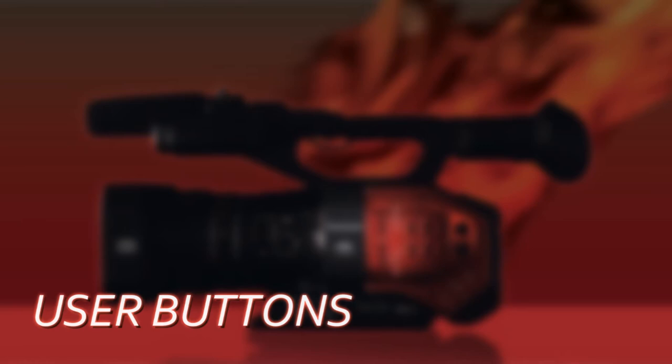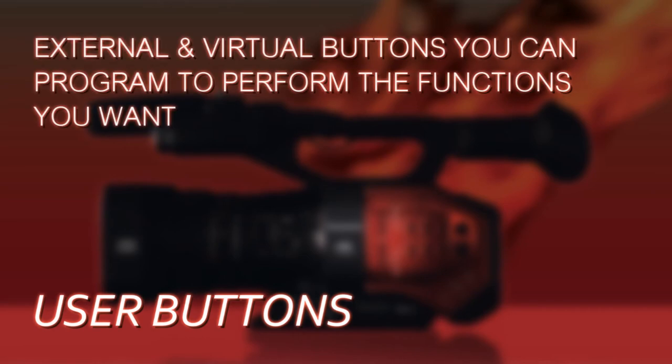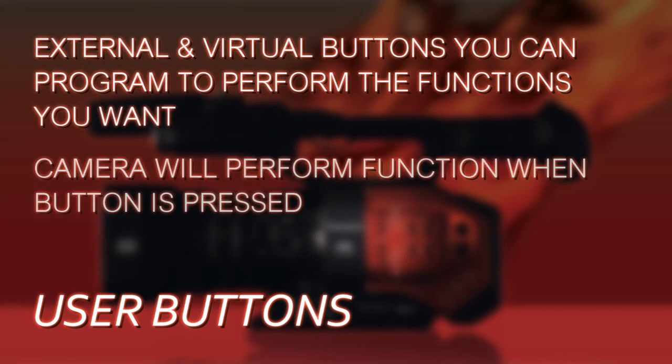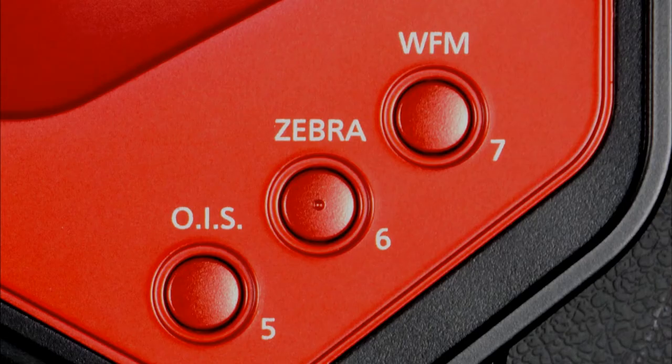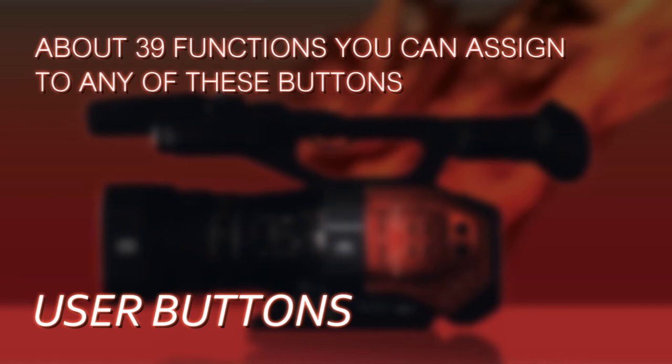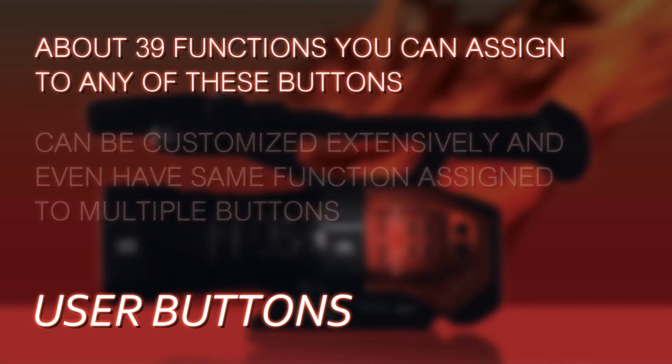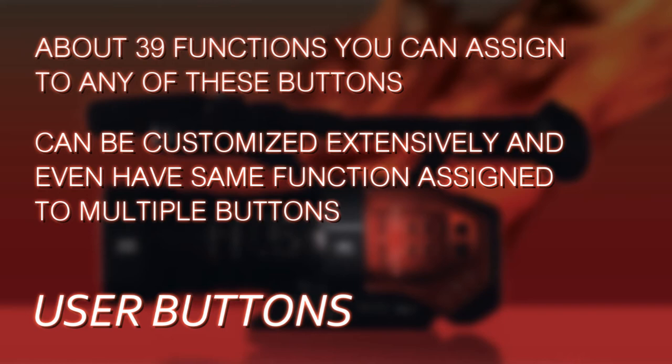The DVX200 has a lot of user buttons that are reprogrammable — you assign what function you want to have happen when that button is pressed. There are eight physical buttons: four here, three on the back of the camera, and one up by the zoom rocker. You also have four virtual buttons which come up on the left side when you touch the LCD. Having 12 user buttons gives you a lot of ability to program and customize the camera, with about 39 different functions to choose from — a tremendous amount of customizability.